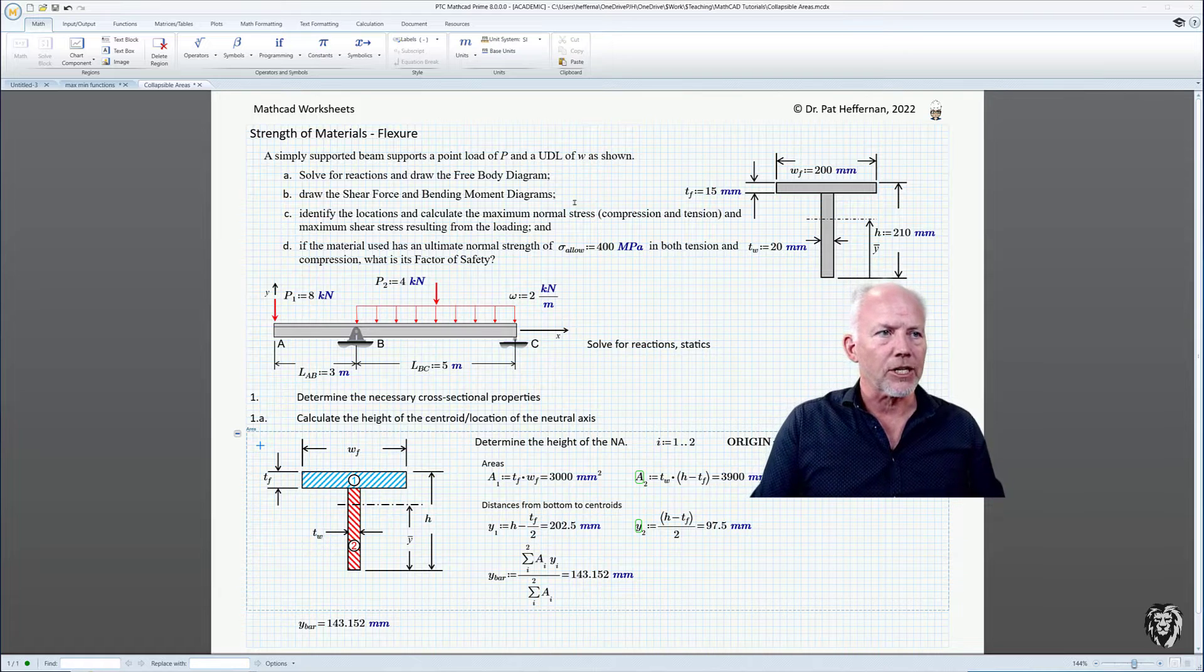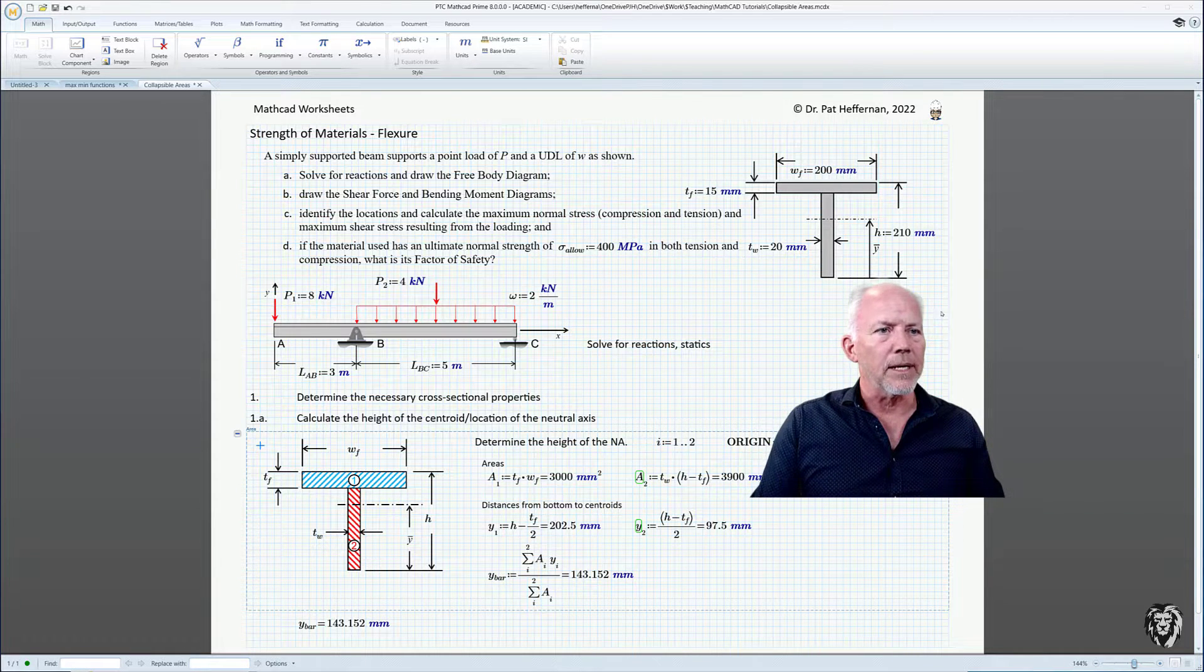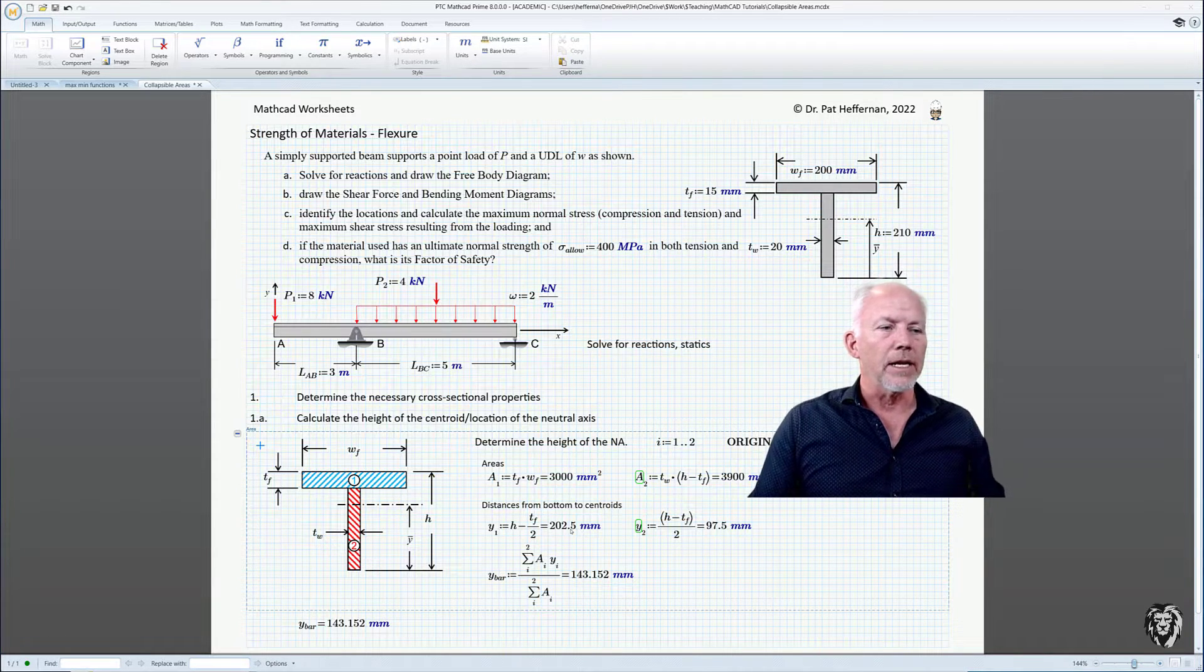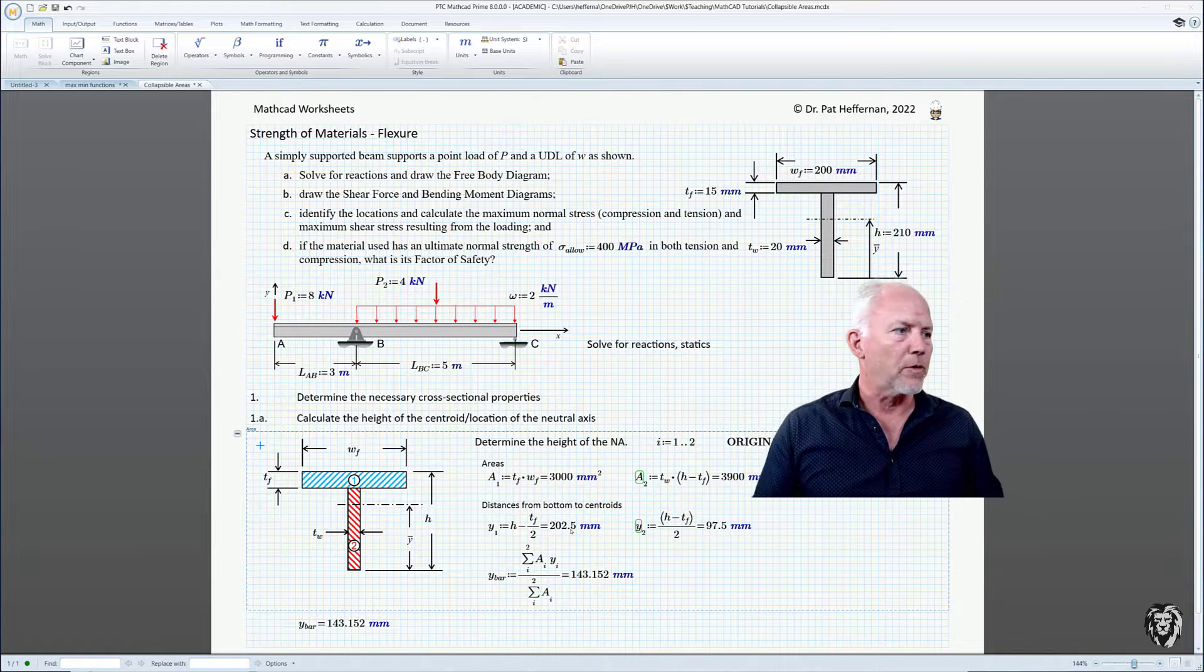So in this case, we have the cross-section, which is this T-beam defined up here, and we need to figure out some of its cross-sectional properties before we can move on.